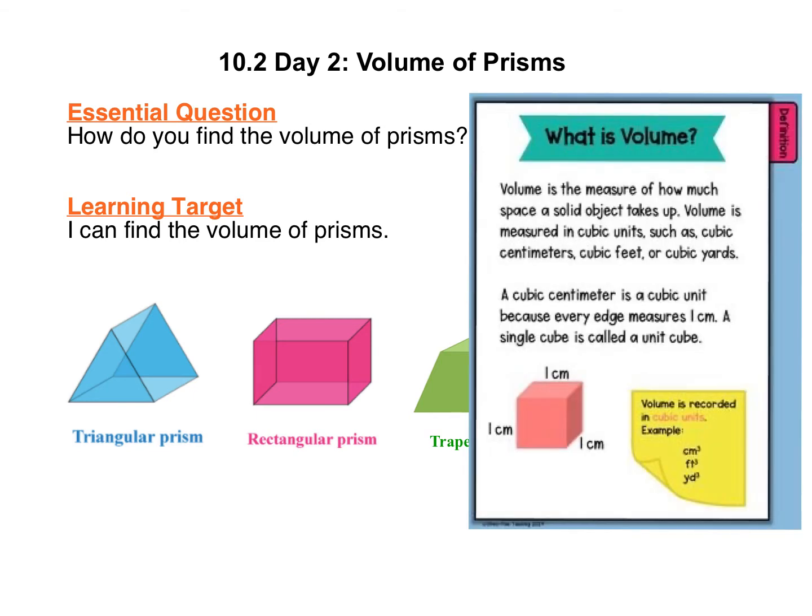Before we get to the formulas, let's just review what volume is. Volume is the measure of how much space a solid object takes up. It's measured in cubic units like cubic centimeters, cubic feet, or cubic yards. Here's an example of what a cubic centimeter would be. It's one centimeter on all sides of that rectangular prism. So when we're calculating the volume, we're calculating how many cubic units that three-dimensional object occupies.